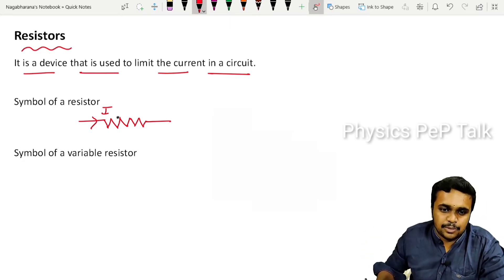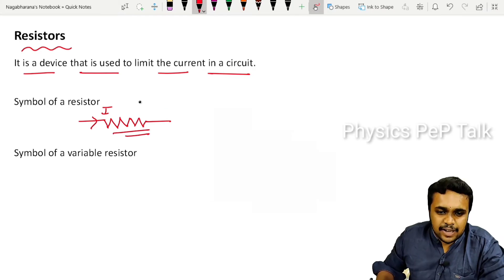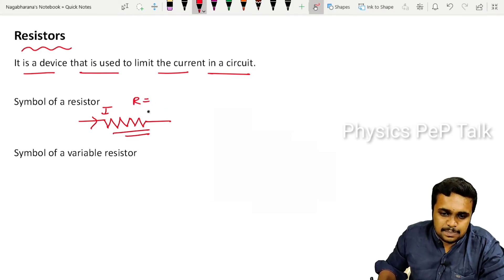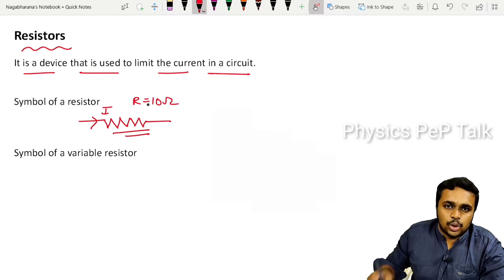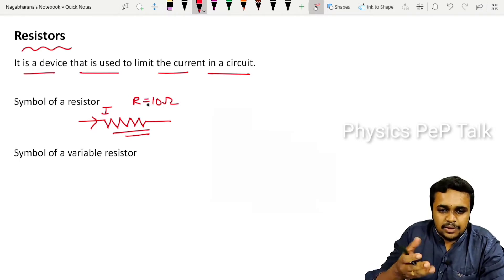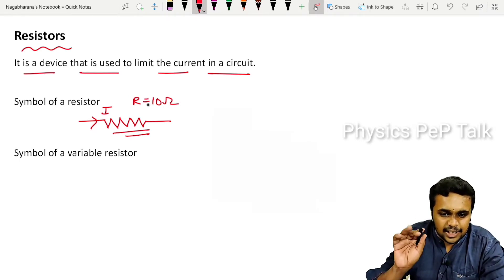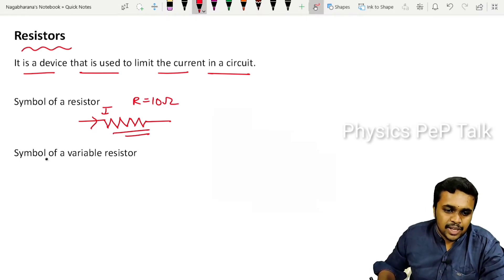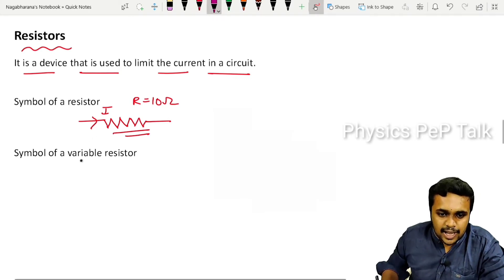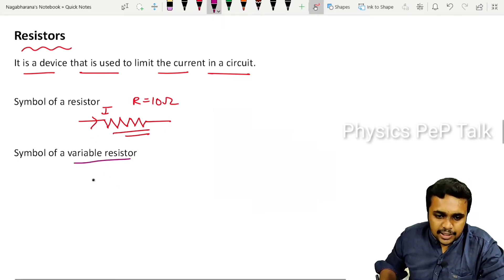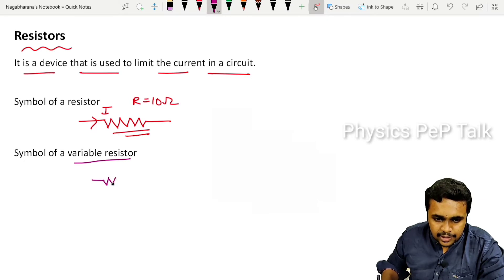This is a fixed value resistor. If I say the value of resistance of this particular resistor is 10 ohms, throughout the experiment the value of that resistor will remain 10 ohms — it will not change. That is called a fixed value resistor.